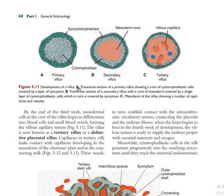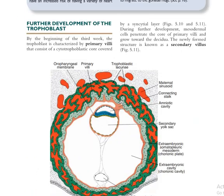By the third week, the trophoblast develops to form different sinusoids and villi. First, you have a primary villus containing cytotrophoblast and syncytiotrophoblast. After that, you have a secondary villus, which has inside the mesoderm core — we find the cytotrophoblast, syncytiotrophoblast, and mesoderm, which is formed from the hypoblast and cytotrophoblast.